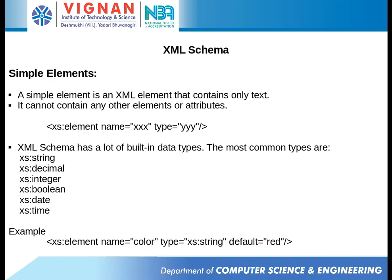Again, we will see the same basic building blocks which you have seen with DTD — like elements, attributes, entities, and so on. In XML schema, elements are of basically two types: simple elements and complex elements. Simple elements are those which are directly text nodes, meaning they directly hold some data; they neither have a child element nor an attribute.